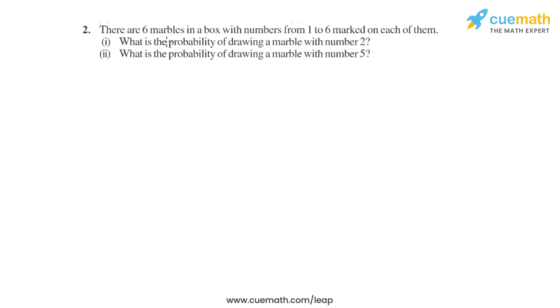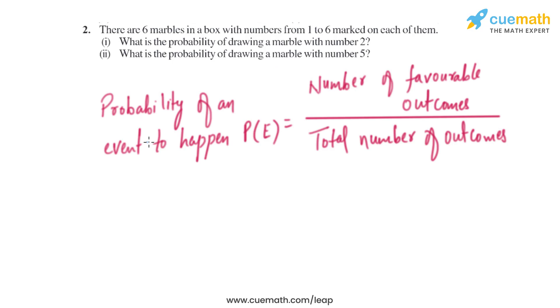Question 2 of this exercise says there are 6 marbles in a box with numbers from 1 to 6 marked on each of them. What is the probability of drawing a marble with number 2? What is the probability of drawing a marble with number 5? We know that the probability of an event to happen, P(E), equals the number of favorable outcomes divided by the total number of outcomes.